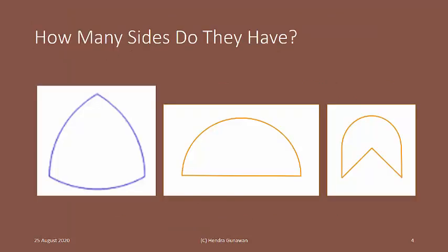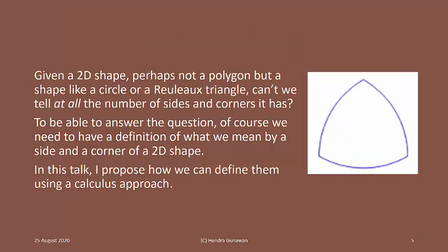How many sides do they have? Given a 2D shape, perhaps not a polygon but a shape like a circle or a Reuleaux triangle, can we tell at all the number of sides and corners it has?